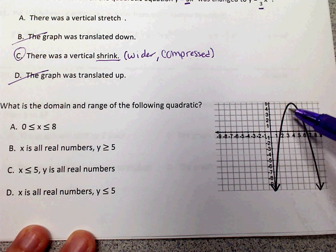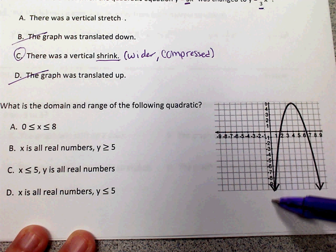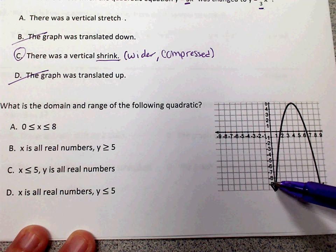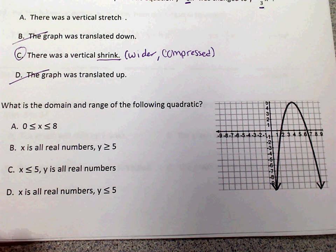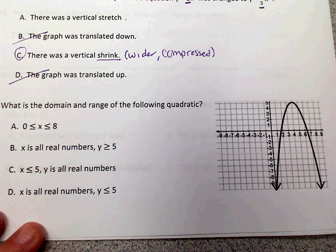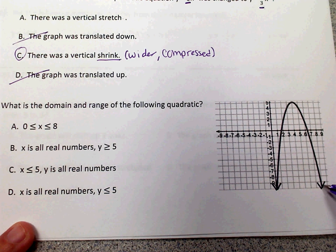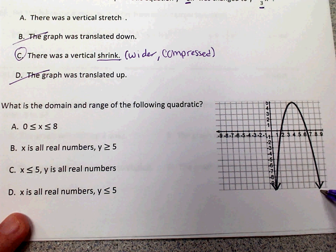your domain is always going to be all real numbers because these arrows imply that it just keeps going, and it keeps getting further and further, it keeps spreading. As it's going down, it's getting wider. So the domain is all real numbers.